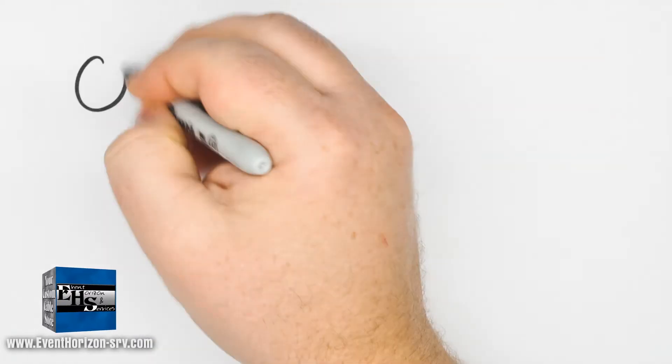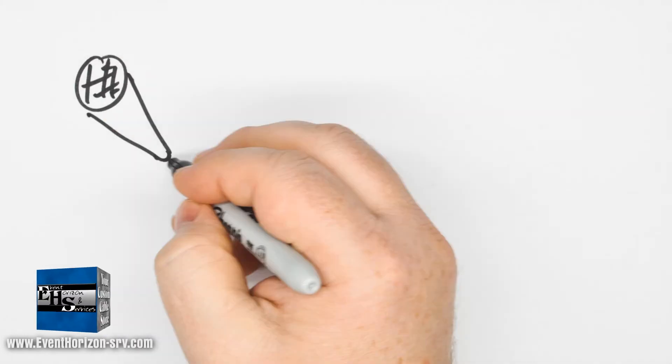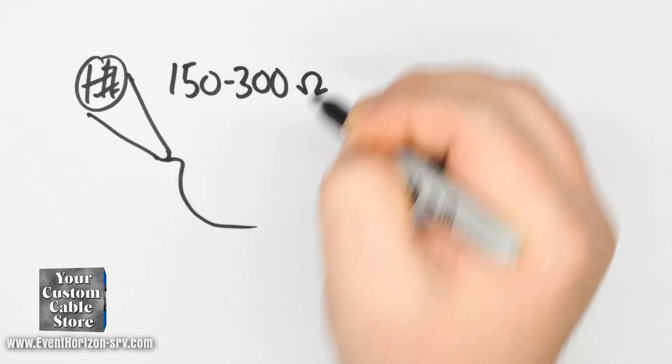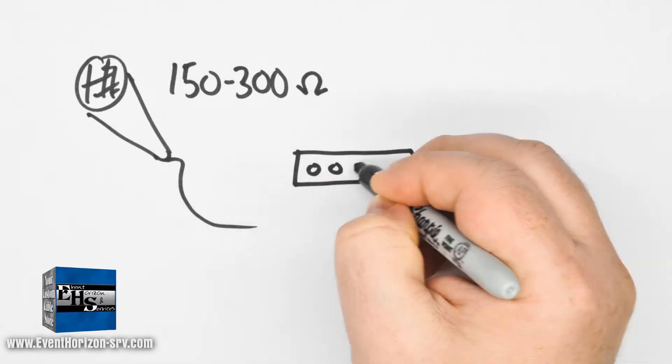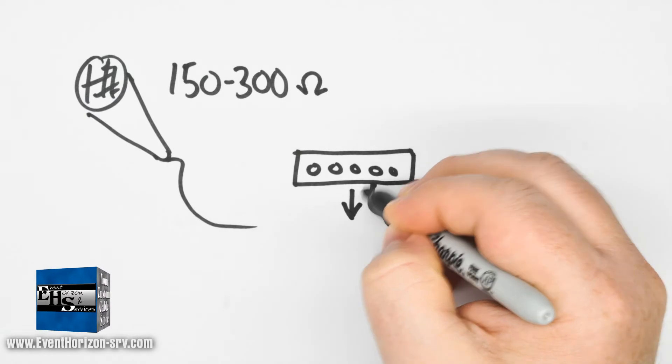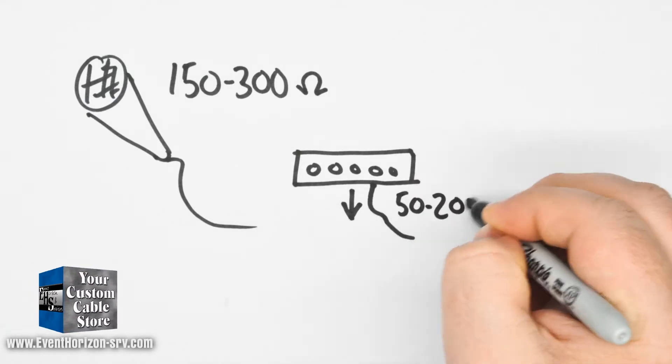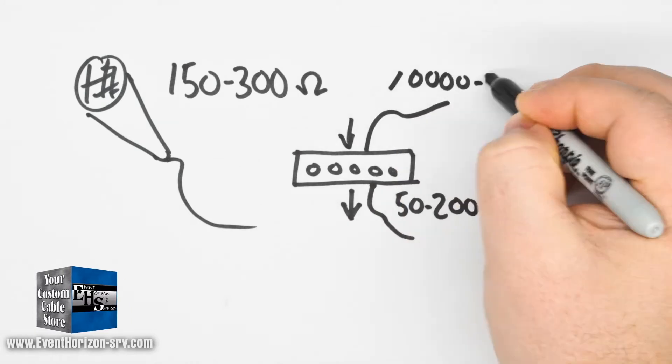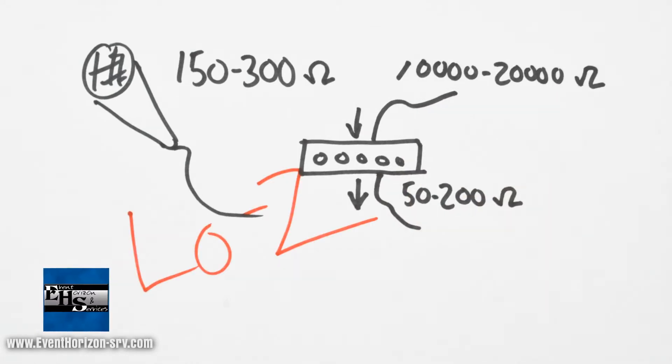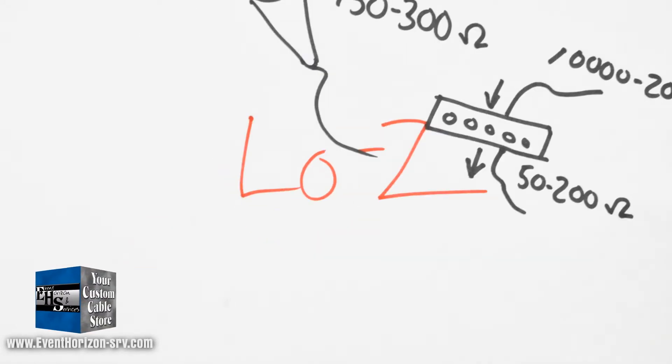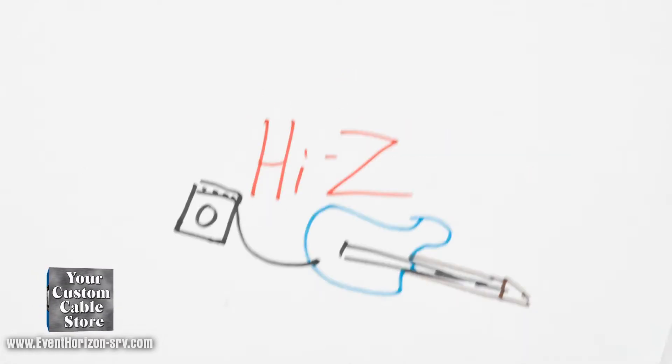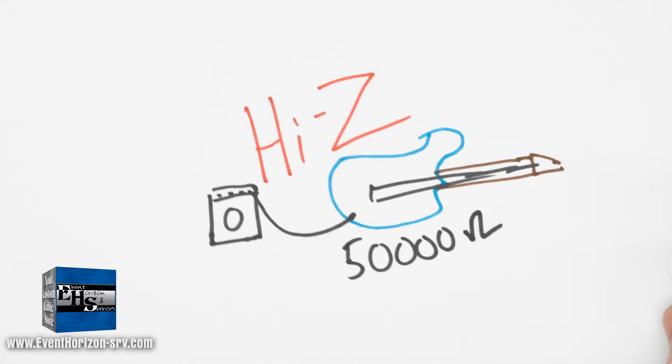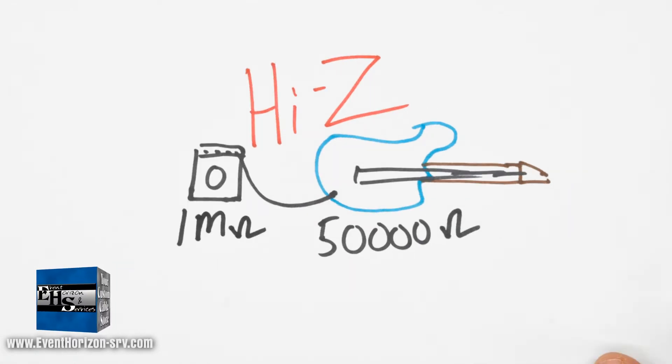Every input and output circuit has impedance. A typical mic might have an impedance of 150 to 300 ohms. Many audio outs have an impedance of 50 to 200 ohms. Many audio inputs have impedance of 10,000 ohms to 20,000 ohms. All these I mentioned would be considered low-Z connections. A guitar might have an impedance of 50,000 ohms and a guitar amp an input of 1 million ohms.